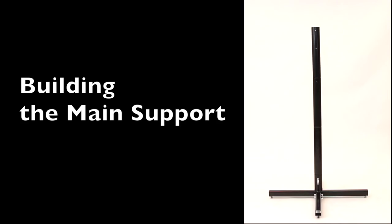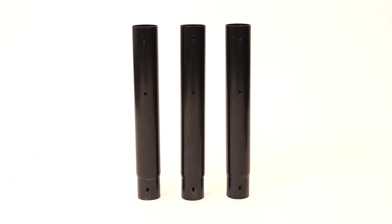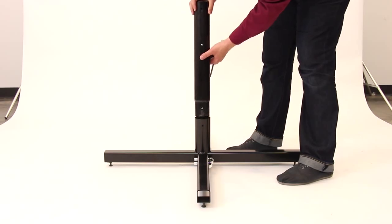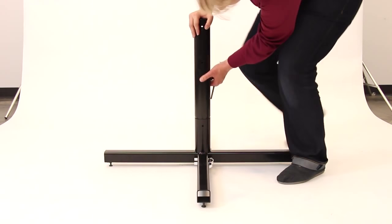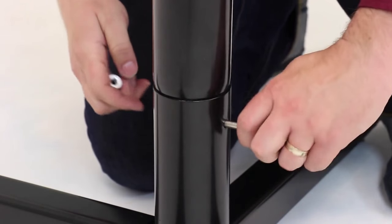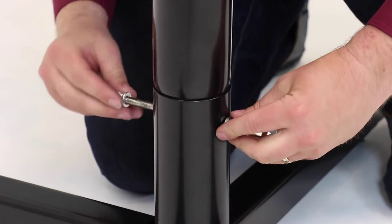Now you're ready to assemble the main support. The support assembly consists of three identical tube components with tapered ends that stack on top of one another. Start by inserting the tapered end of the first tube into the base. Make sure that the holes are lined up, and then use a longer quick clamp to secure the assembly.